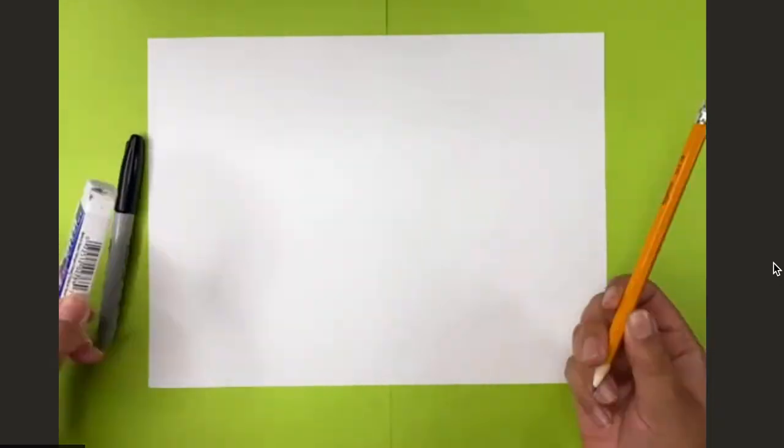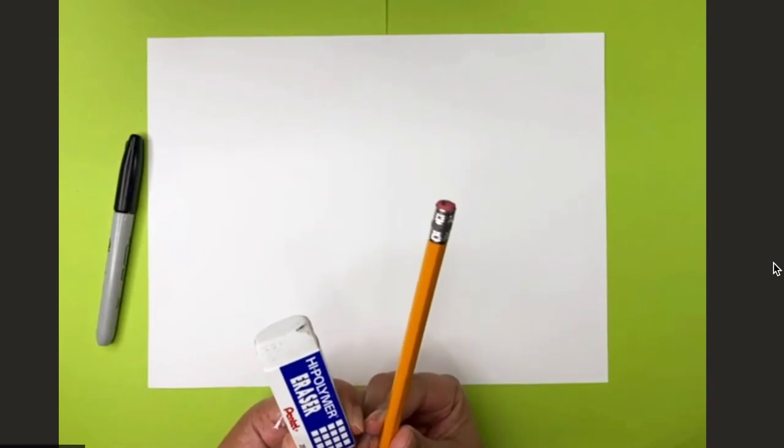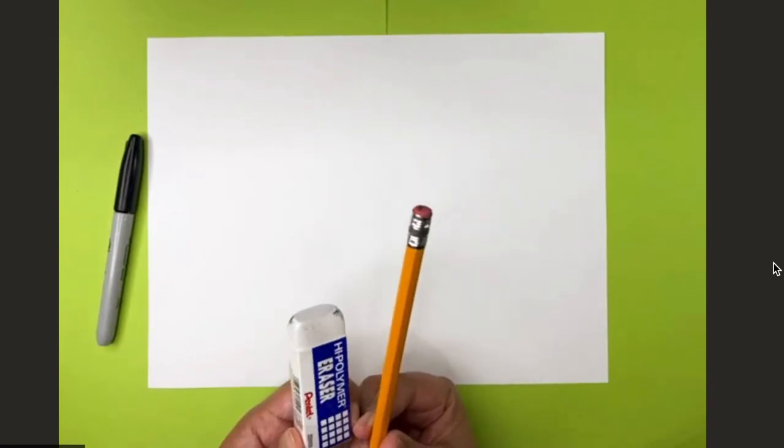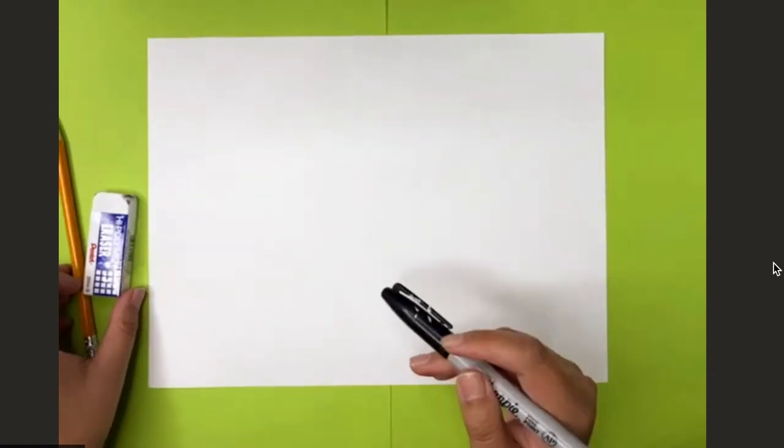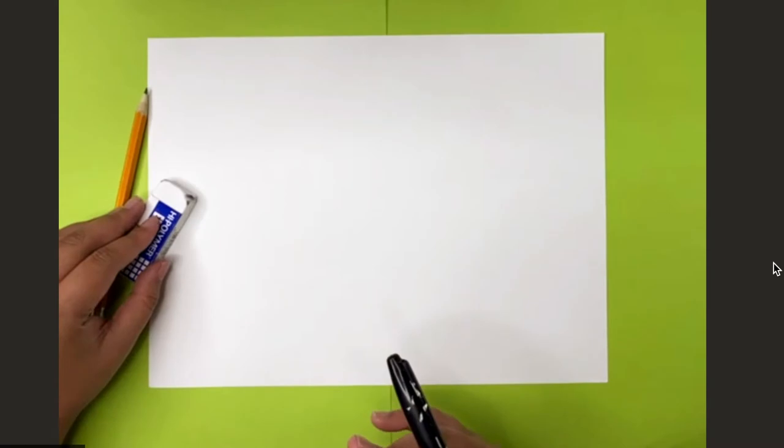So I have a pencil and eraser. Yes. Great. I'm going to be using my marker just like before so you can see my lines, but you can use your pencil and eraser, so in case you make any mistakes, you can erase it easily.